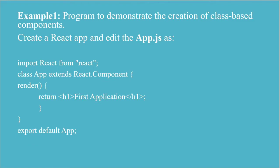Let's discuss an example to demonstrate class-based component creation. First we need to create a React application — as discussed in the previous session — and then go to the app.js file. In that file, you first need to import React from the React library. After importing, you create a class component. In this example, we have created an App class which extends the React component base class, rendering a 'First Application' header returned by the render function. Finally, we export the default App.